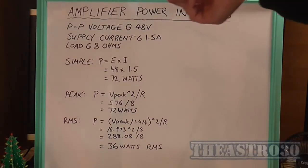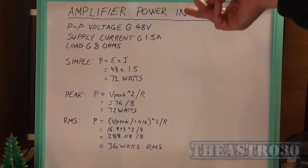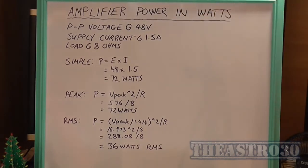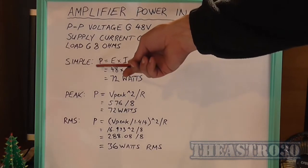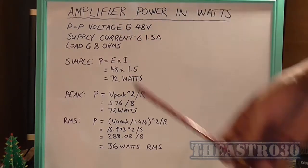There are several ways of working out what an amplifier's power output is in watts. The simplest is the power law P equals E times I.